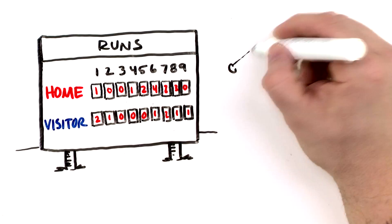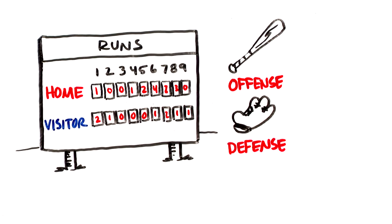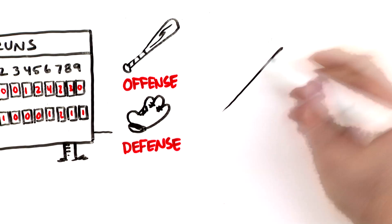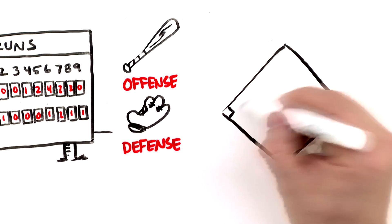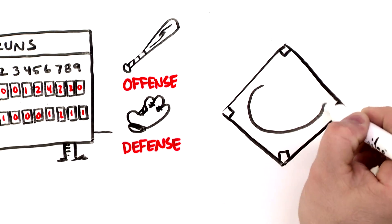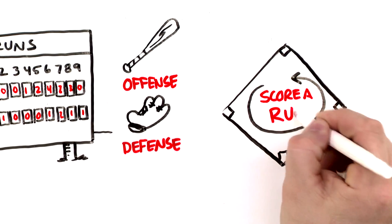There are two teams that alternate between offense and defense, and like other games, each tries to score more points than the other. But in baseball they don't call them points, they call them runs, and you score a run by completing one circuit of four bases, but only while on offense or at bat.